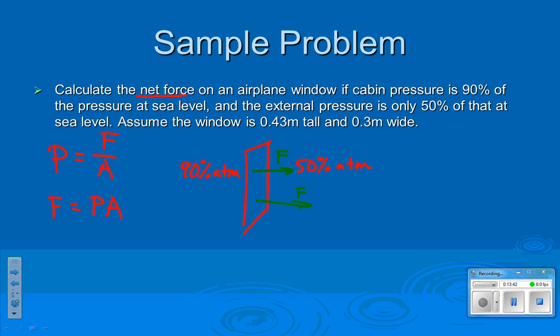90% atmospheric. 90,000? Why 40,000? Oh, yes, of course. 50%? 50,000. So the difference in the pressures? There's 40,000 pascals of pressure on that window. 40,000 pascals of pressure. Acted over the area. The area being length times width. 0.43 meters times 0.3 meters.